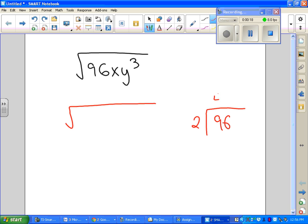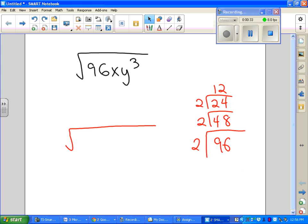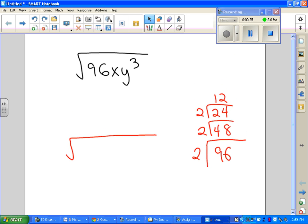2 goes into 96, 48 times. 2 goes into 48, 24 times. 2 goes into 24, 12 times. And I am now out of room. Oh, it's allowing me to do the whole thing. All right, 2 goes into 12, 6 times. 2 goes into 6, 3 times. And 3 goes into 3 once.